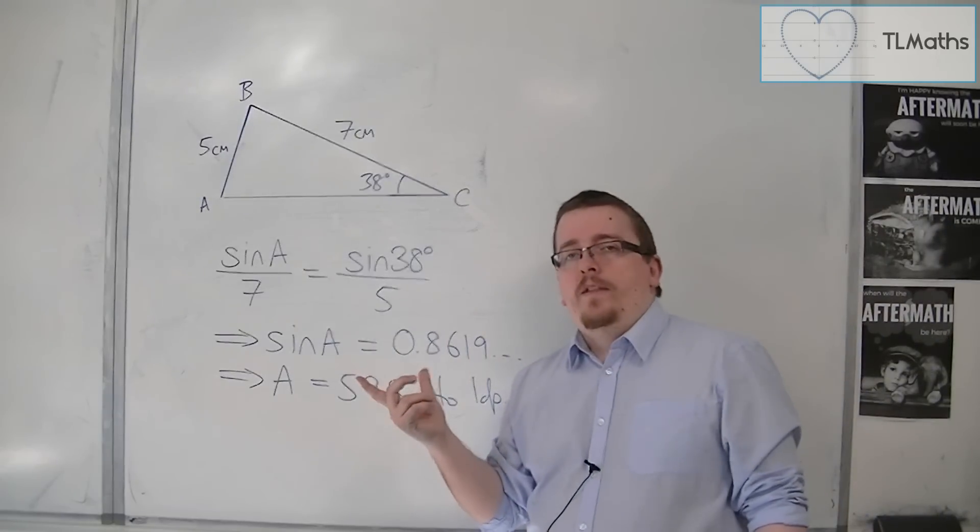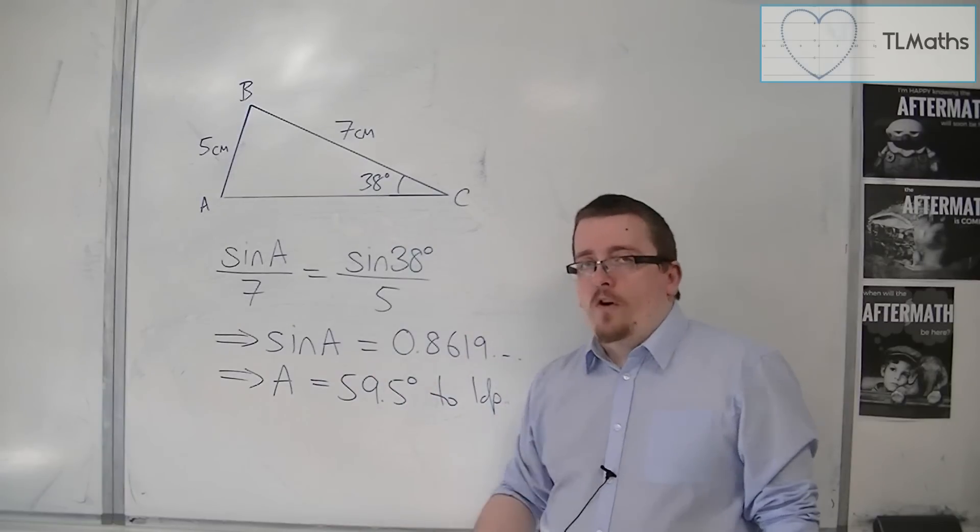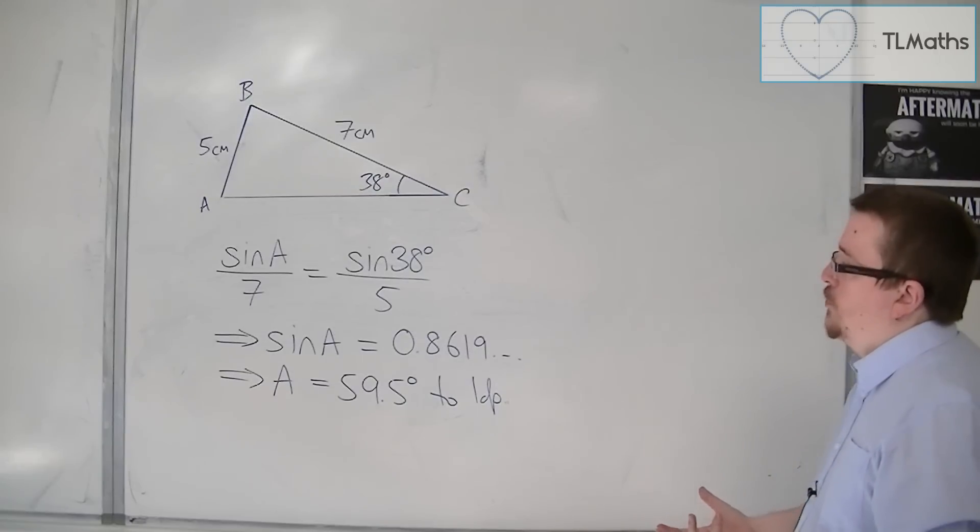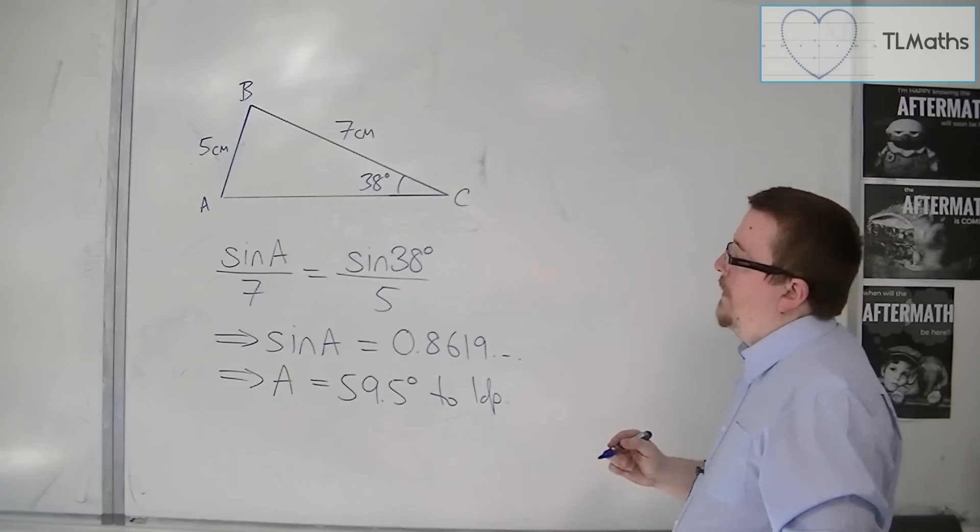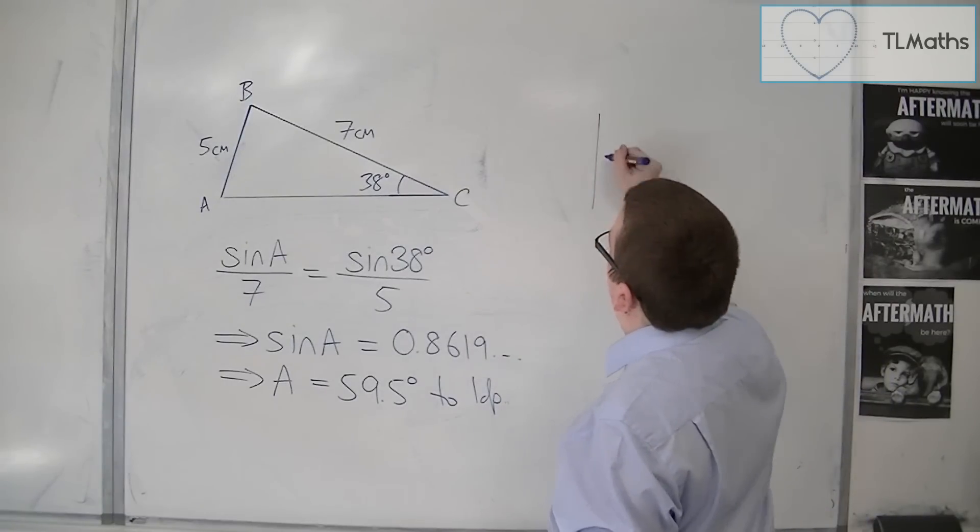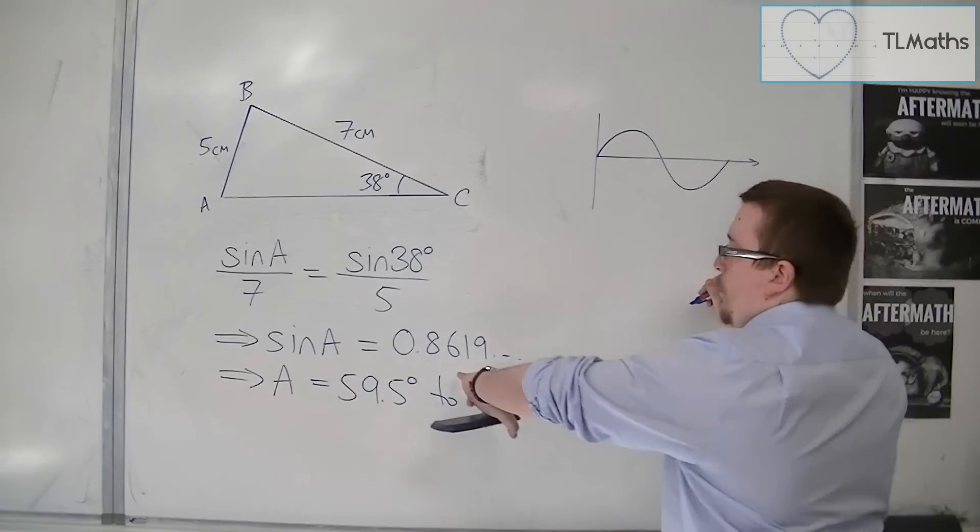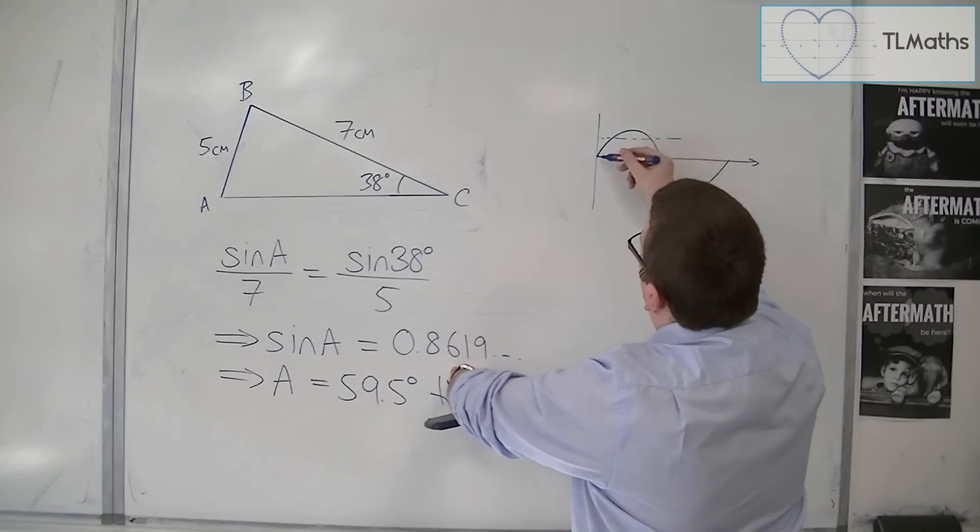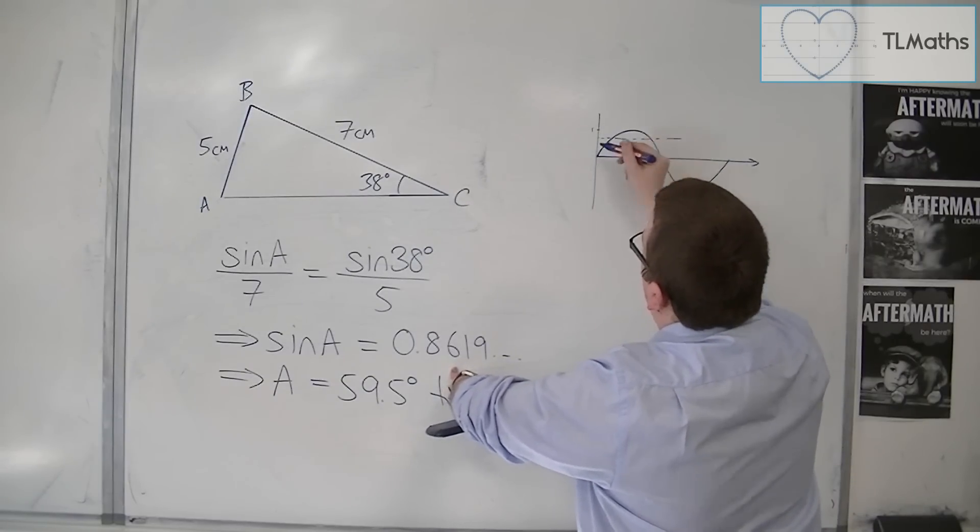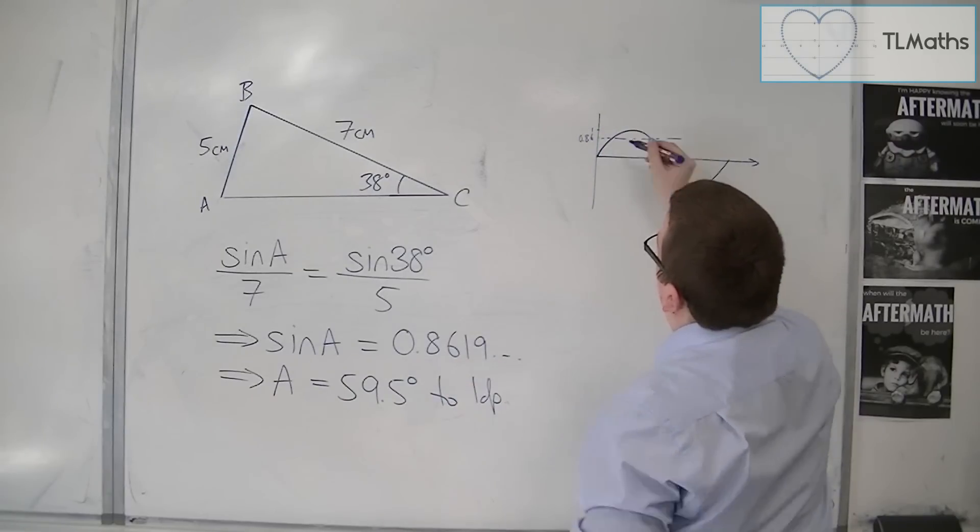Now what is going to link in with what we do later on when we're working with trigonometry and trig equations is that if you look at the curve of sine, which you may have seen before at GCSE, then for 0.8619, because we're going from 0 to 1, so 1's that top value, so 0.86 is about there. And we can see that there are actually two solutions.